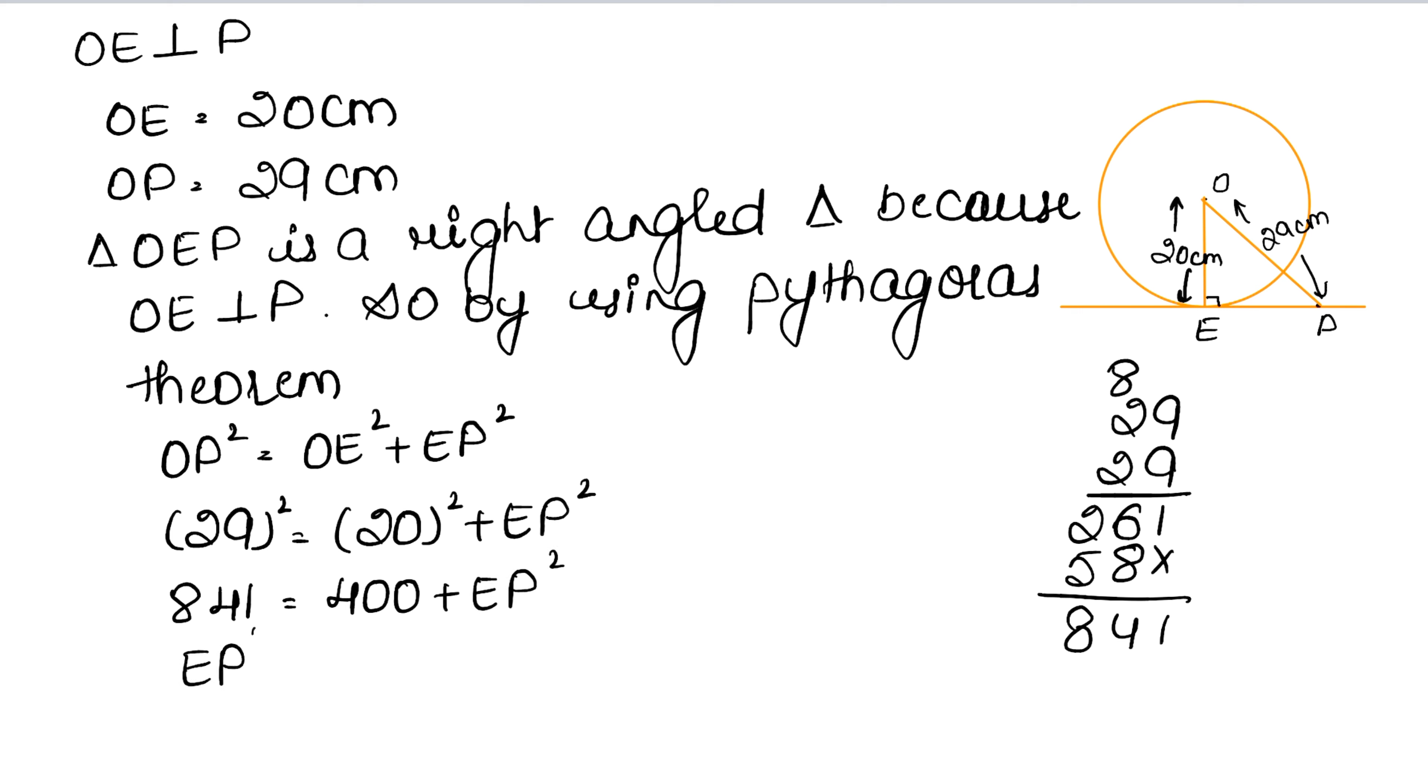So EP square is how much? 841 minus 400, that is 441. So EP is square root of 441, and this is 21.